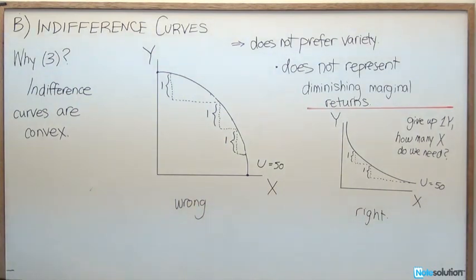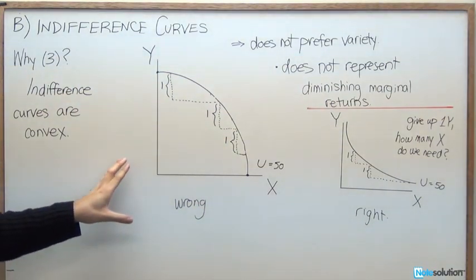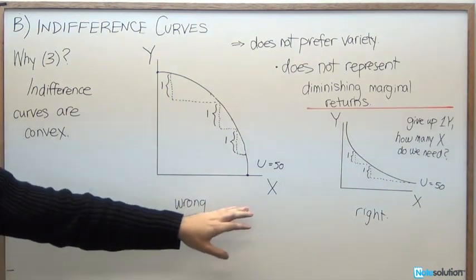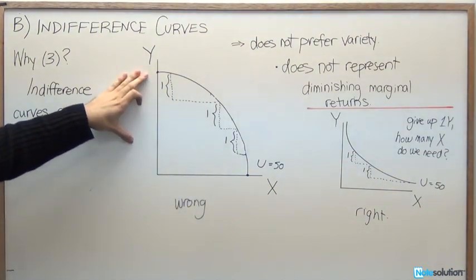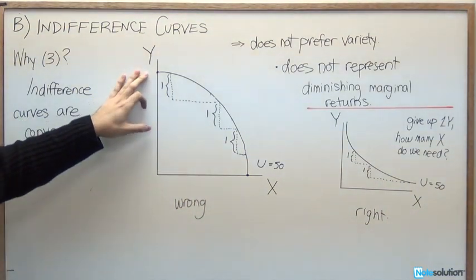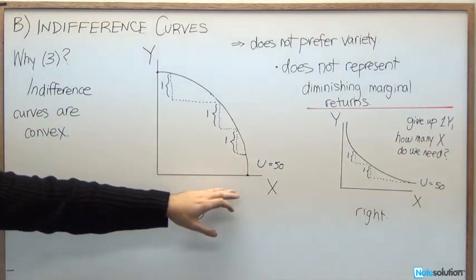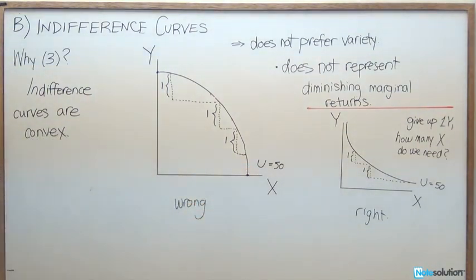Is that realistic? Well, let's say that you want to consume two goods. You're going to have chips and you're going to have some coke. Well, you can consume only bags of chips and then get a utility value of 50, or you can consume only cans of coke and get the same utility value of 50. But is that realistic?